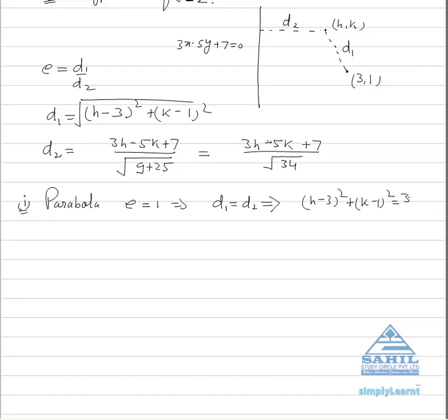Got this? And we have to square them, and to find out the locus we have to convert h and k into x and y also. So what will be the equation of parabola?